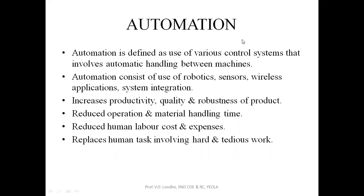If we see in detail, automation is defined as the use of various control systems that involves automatic handling between machines. It is a process, and for the production of any product, if there is no automation, then it will be time consuming. Automation basically consists of the use of robotics, sensors, wireless applications, and system integration.